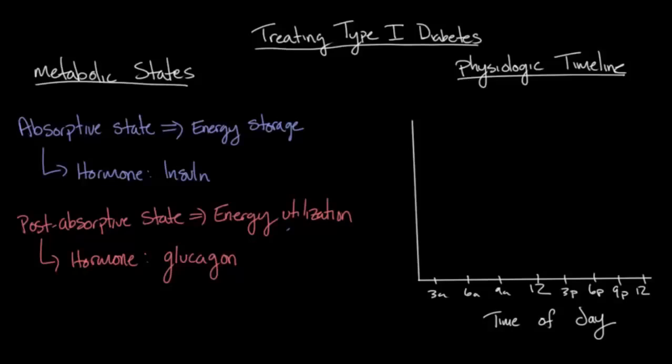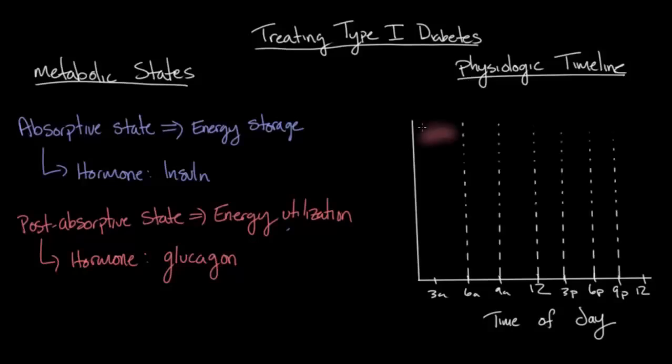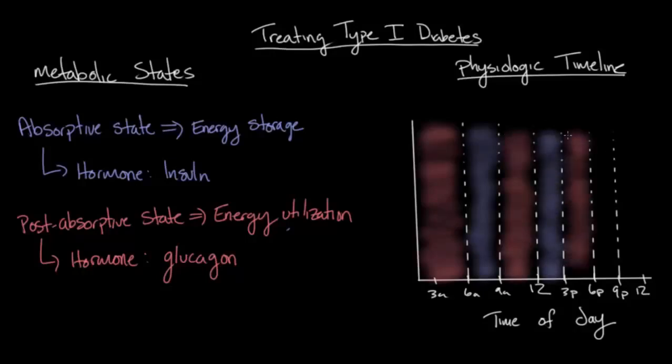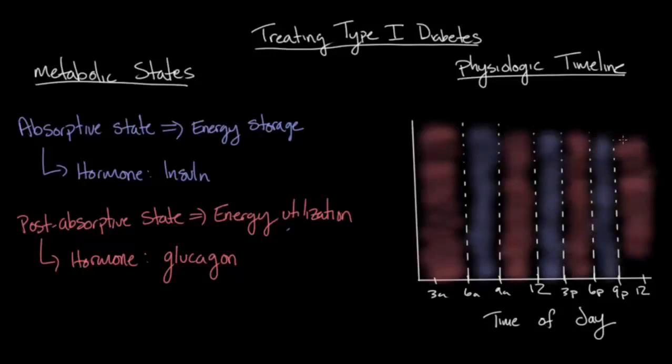As I mentioned before, the body will fluctuate back and forth between this absorptive state and post-absorptive state. If you look closely, this fluctuation makes sense. Around 6 a.m., you go from the post-absorptive state while you're sleeping, then you eat breakfast, and you go into an absorptive state to absorb the nutrients from the food. Then as your morning goes on, you go back into the post-absorptive state, and so on and so forth.